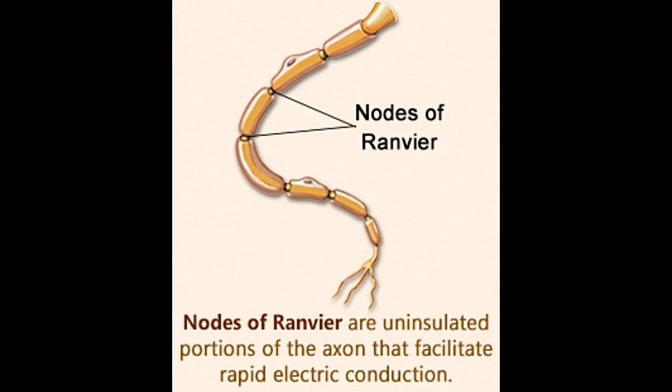Nodes of Ranvier are located between sheets of myelin. They facilitate speedy electric transmission. Buzzel, in this post, explains its function and significance. Take a look.